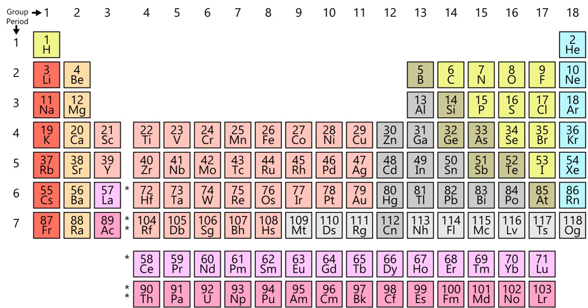However, astronomical observations suggest that ordinary observable matter makes up only about 15% of the matter in the universe. The remainder is dark matter, the composition of which is unknown, but it is not composed of chemical elements.